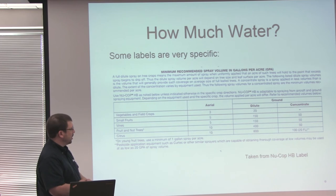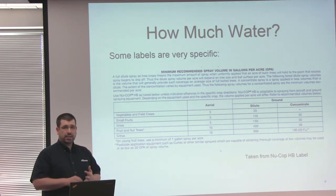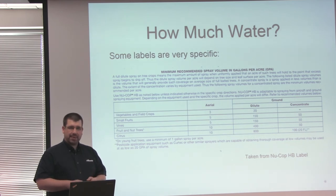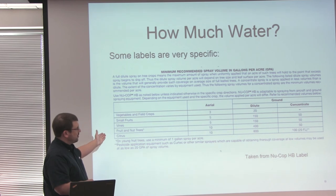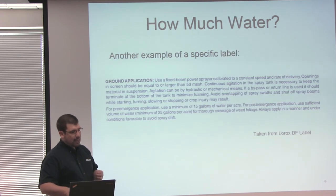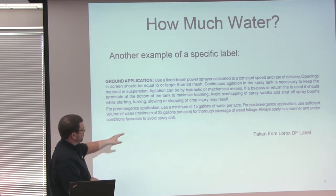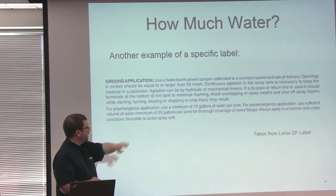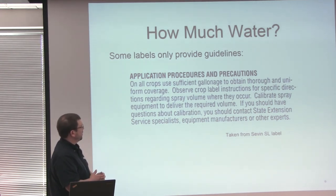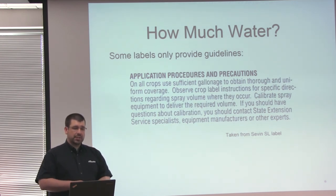How much water do you need to apply with the pesticide? It basically depends on whether you're using a sprayer or a backpack sprayer, and you determine how much you need in the tank. It is always very important to calibrate your backpack sprayer or pull-behind sprayer in order to get the correct amount of water and pesticide into the tank. Sometimes pesticide labels have a chart — in this case for vegetables, it says 20 gallons minimum per acre. Another example might be written in a paragraph: for post-emergence application, a minimum of 25 gallons per acre. Other labels might just say sufficient gallons to obtain thorough and uniform coverage. It really depends on what method you are using to apply your pesticides.